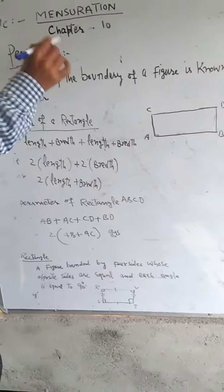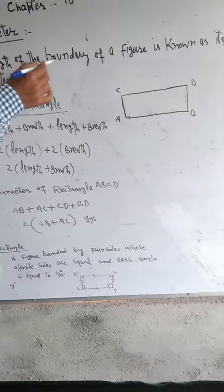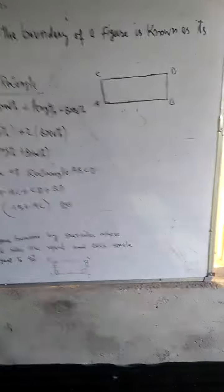Now I'm going to explain perimeter. The definition is that the length of the boundary of a figure is known as perimeter.